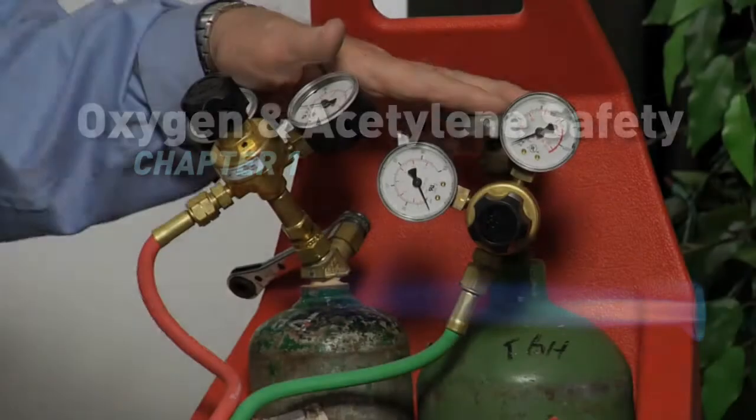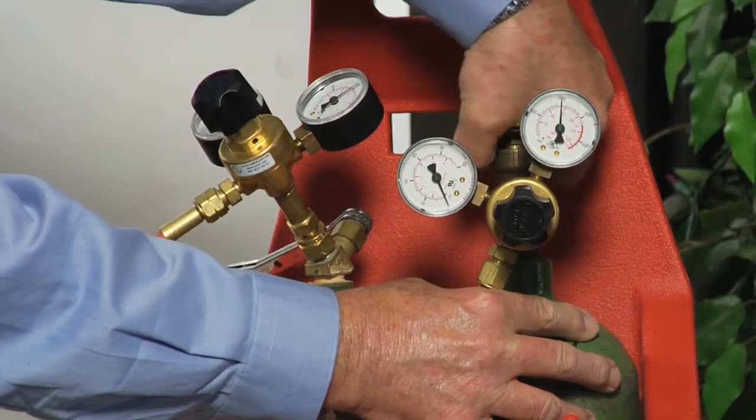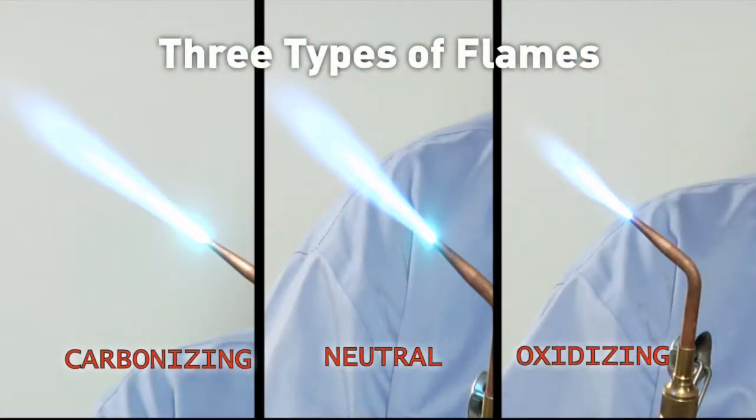In chapter 1, oxygen acetylene safety, we discuss topics such as choices in equipment, setting pressures correctly, and understanding the three types of flames and when you should use each one.